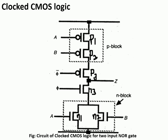We have two more transistors P3 and N3 connected at the intermediate level. At the gate of P3, the input is coming from φ-bar, and at the gate of N3, the input is coming from φ. The output Z can be evaluated depending upon the values of φ and φ-bar.